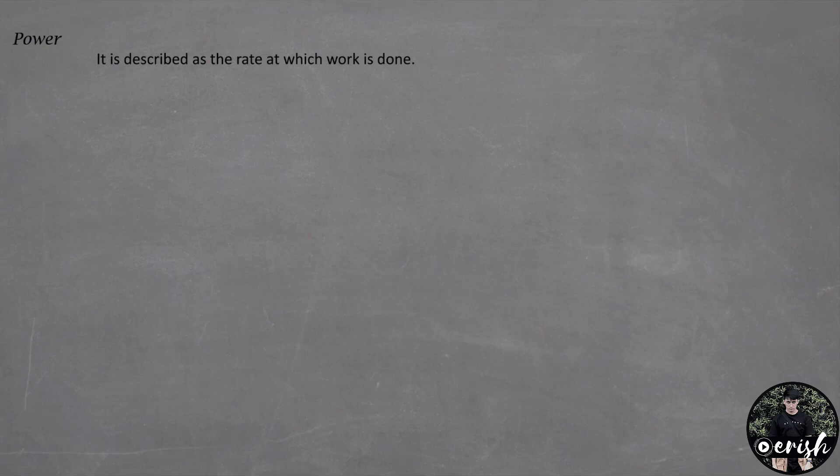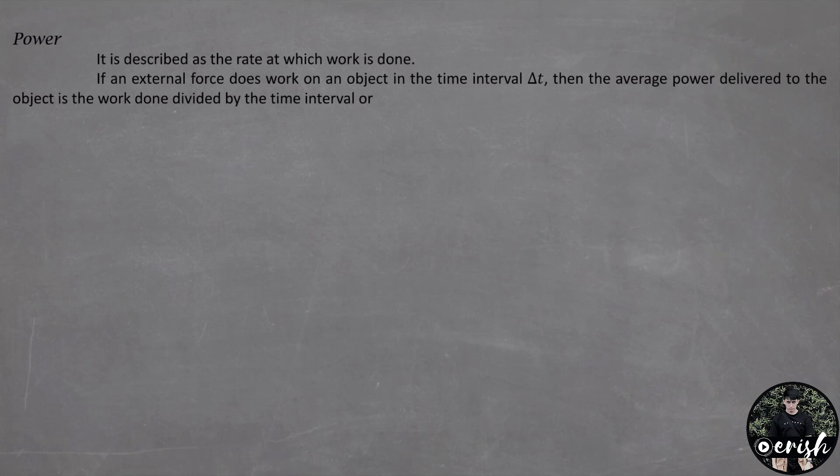Power is described as the rate at which work is done. If an external force does work on an object in the time interval delta T, then the average power delivered to the object is the work done divided by the time interval. We have here the formula for the average power, work over time.